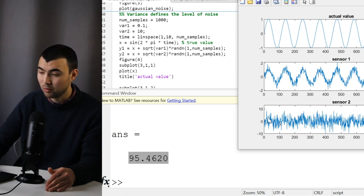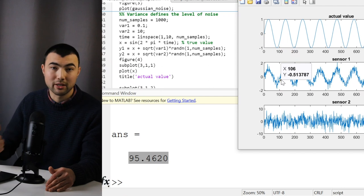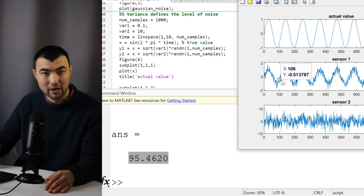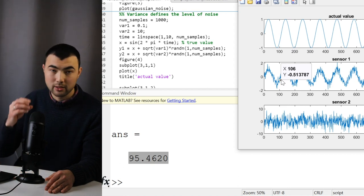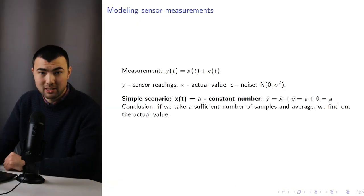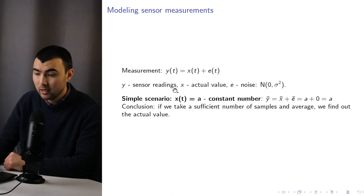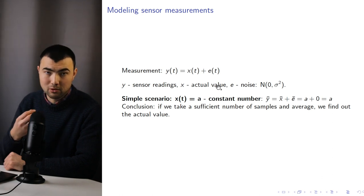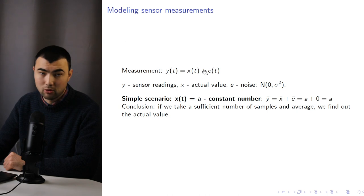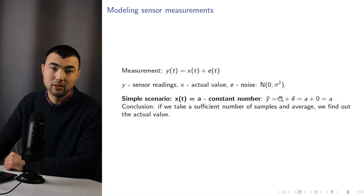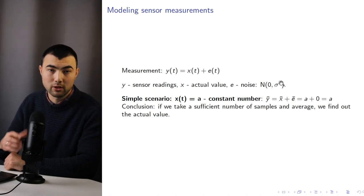This means we can model the level of noise by adjusting the variance of the normal distribution. When we have a normal distribution with low variance, we have a high-quality sensor. In contrast, a distribution with high variance indicates low-quality sensor measurements. We can model the sensor measurements using the equation y = x + e, where y is the sensor reading, x is the actual value we want to extract, and e is noise modeled as a Gaussian distribution with mean zero and some variance that depends on the sensor quality.